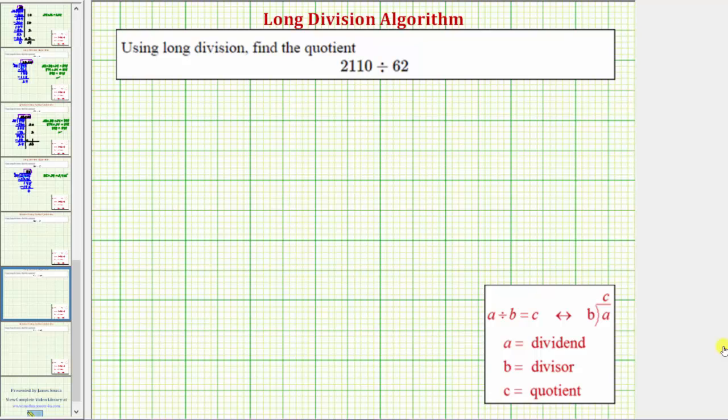We're going to use long division to find the quotient. We have a four-digit number divided by a two-digit number. The first step is to write the problem in division form, so we can write this as 2110 divided by 62.